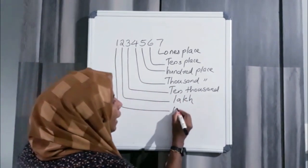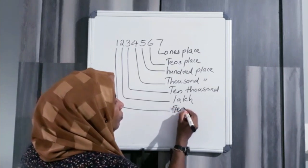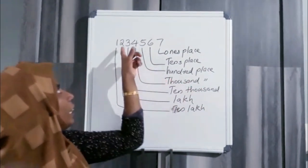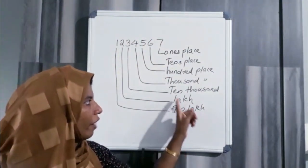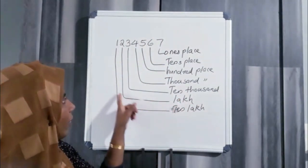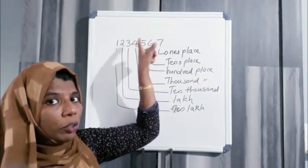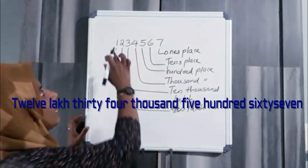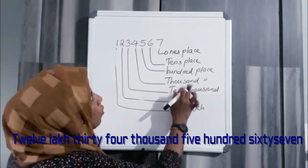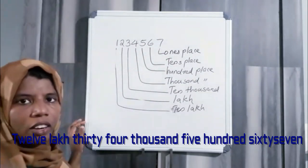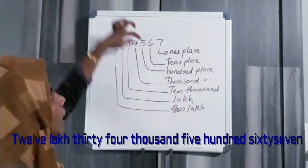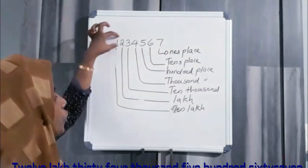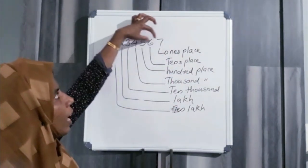Now we'll go from 1,000 to 10,000 — that means 1,00,000. So 1,00,000 is saved. This is 12,34,567.